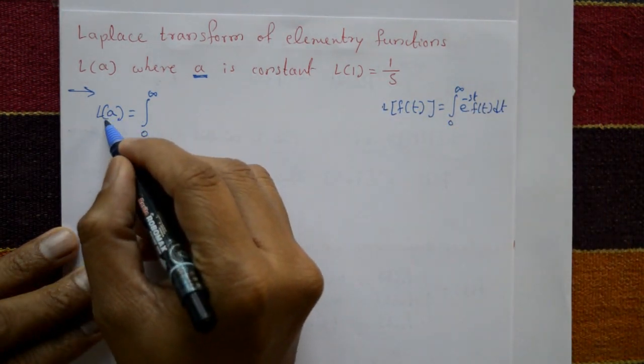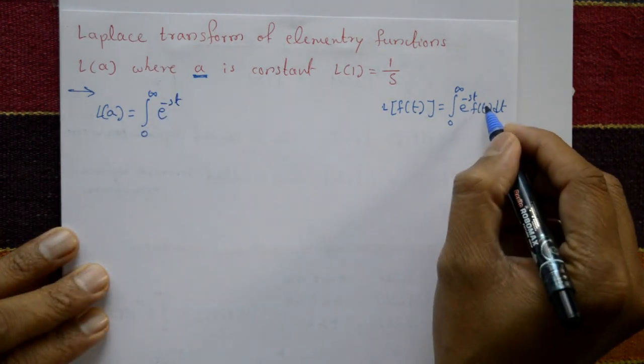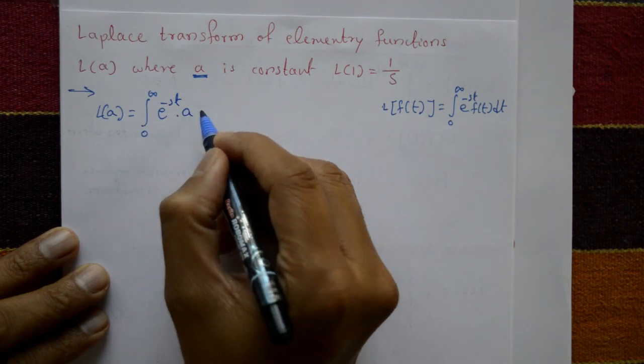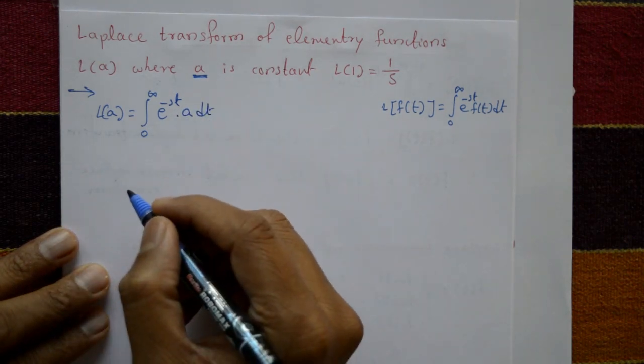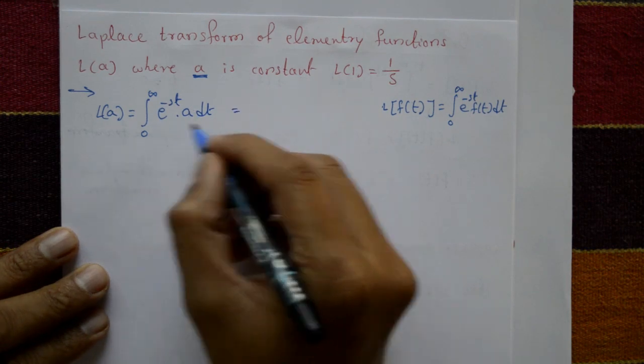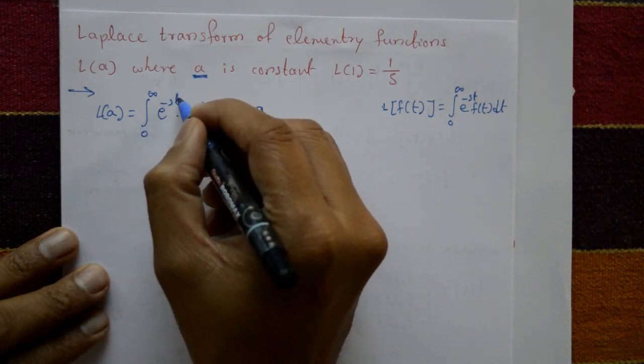E to the power minus st into f(t). f(t) means a, so a times e to the power minus st with respect to t. Now a is outside.